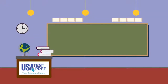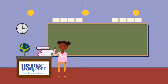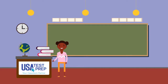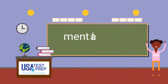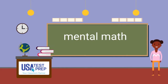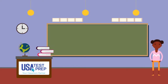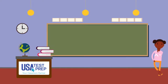Hi friends, my name is Alexis. Welcome to the USA Test Prep classroom. Today we are going to use mental math to add tens and one hundredths to a number. Mental math is when we visualize or see a number in our head but do not use paper to solve a problem. Mental math helps us to add and subtract quickly.